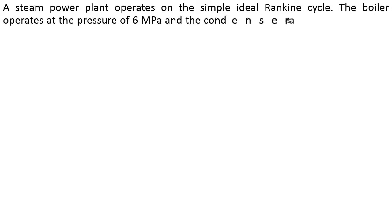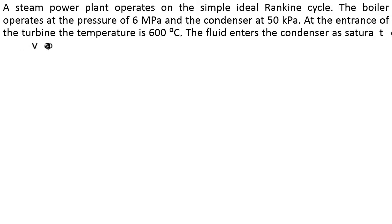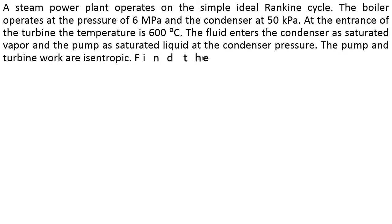Now let's work a problem. A steam power plant operates on the simple ideal Rankine cycle. The boiler operates at a pressure of 6 MPa and the condenser at 50 kPa. At the entrance of the turbine, the temperature is 600 Celsius. The fluid enters the condenser as saturated vapor and the pump as saturated liquid at the condenser pressure. The pump and turbine work are isentropic. Find the efficiency of the cycle.